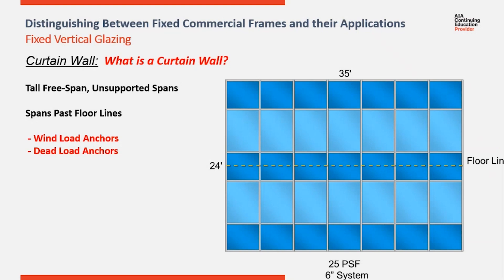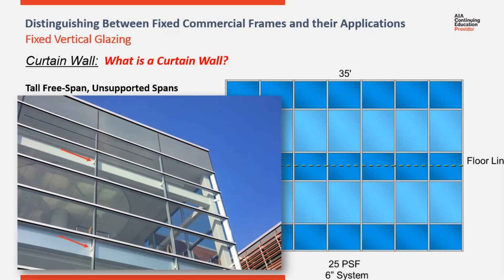Curtain walls are designed to accommodate midpoint anchors where a storefront is not. In this photo, you can see the anchor extending from the beam alongside each of the verticals and secured with a through-bolt. Exposed anchors such as these are painted to match the surround and do not stand out. The proper use of anchors allows curtain walls to continue to extend up an exterior elevation while maintaining the building envelope.